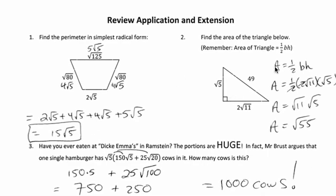For number two, area of a triangle is one half base times height. So here the base is two radical 11 and the height is radical five. And notice the one half and the two, they cancel each other. So I just put a little cancel mark there. And you're left with radical 11 times radical five, which is the square root of 55. You're all done with that one.